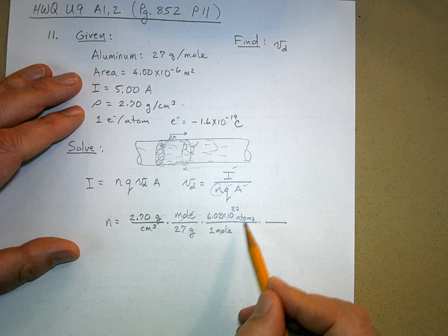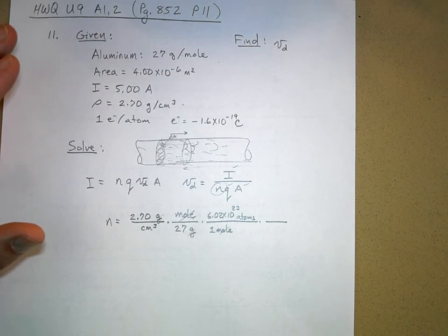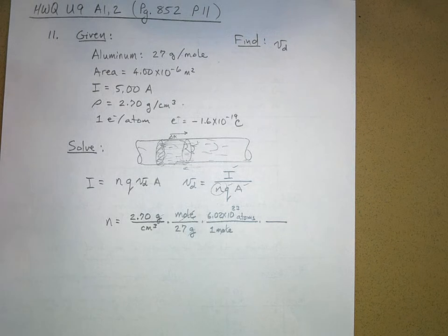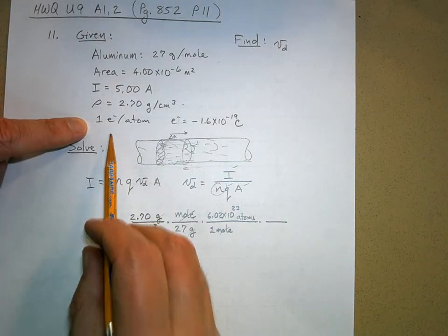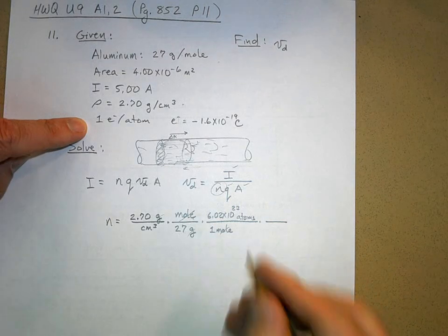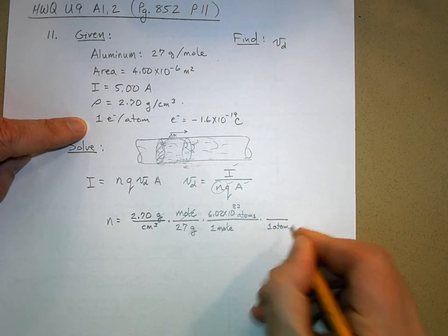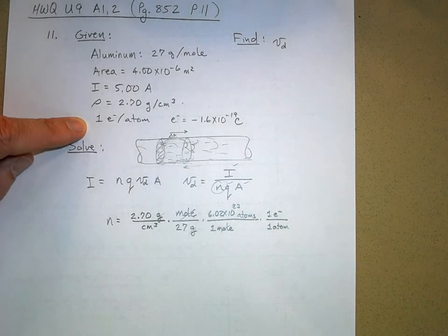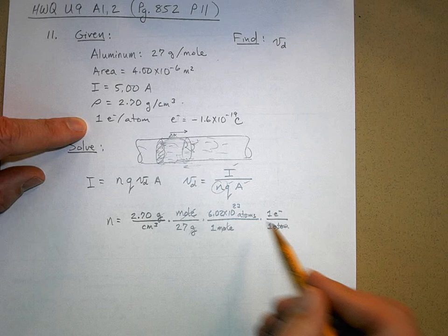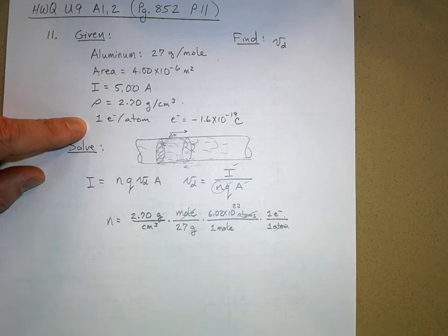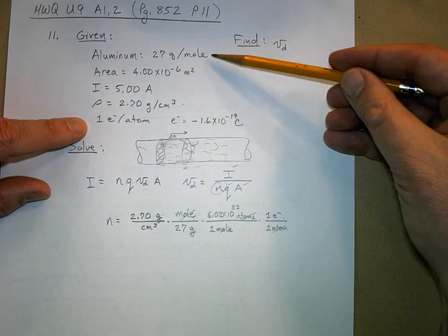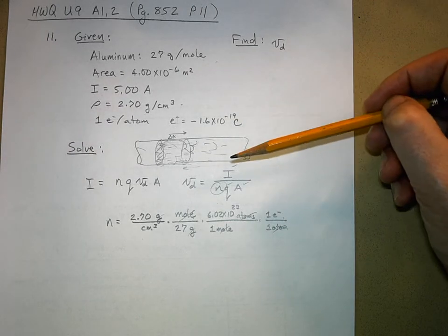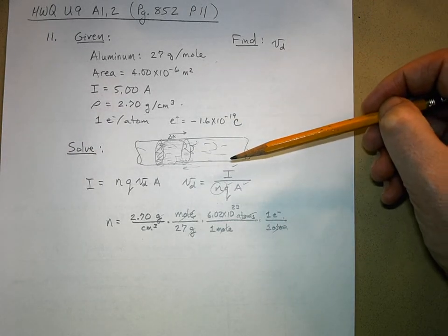So now I got moles per cubic centimeter when I let these cancel, but I don't want moles per cubic centimeter, I want the number of electrons. Well I know that one mole is that avocado guy, 6.02 times 10 to the 23 atoms. Now we've got atoms per cubic centimeter, we're really close. And here's where you have to really pay attention. I want to know how many charge carriers there are, how many charge carriers per atom? One. It said in the problem there's one available electron per atom of aluminum.